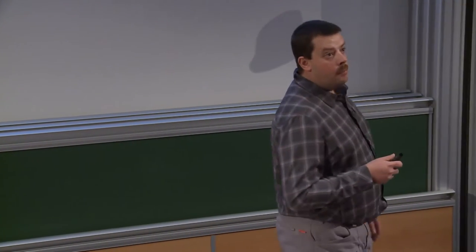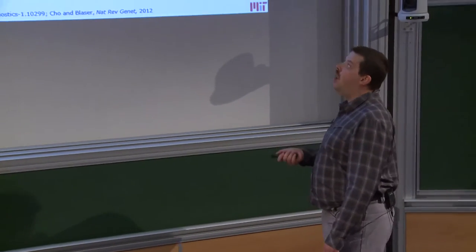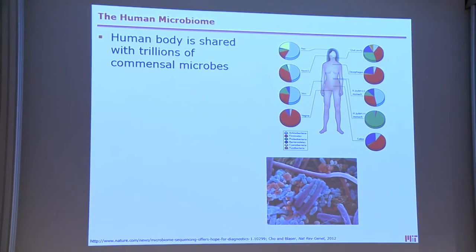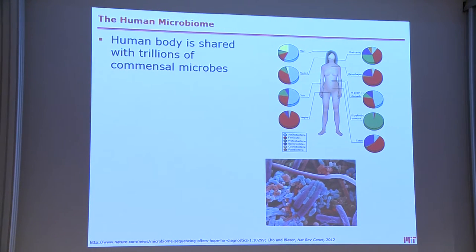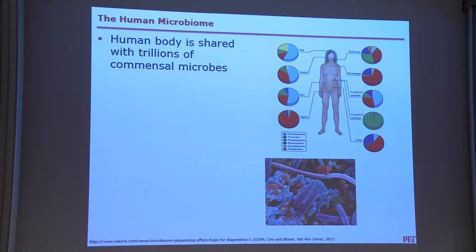The human body is not just eukaryotic cells — it's also a very large amount of microbes: trillions of commensal microbes of a very diverse type. The gut microbiome, for example, is completely different from the skin microbiome, which is itself completely different from the head microbiome. What I'm going to focus on today is the gut microbiome.